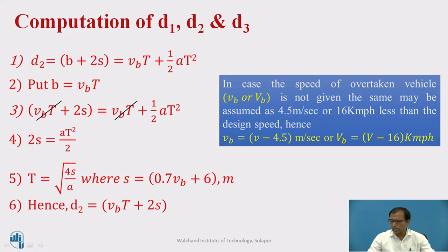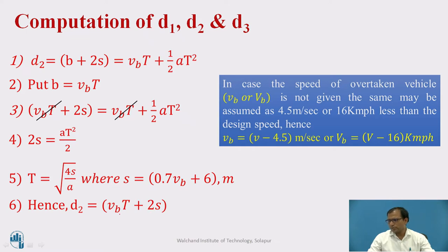Taking T outside by cross-multiplying, we get T equals square root of 4S divided by A, where A is in meters per second squared and S equals 0.7VB plus 6. Therefore D2 equals B plus 2S, where T equals √(4S/A).